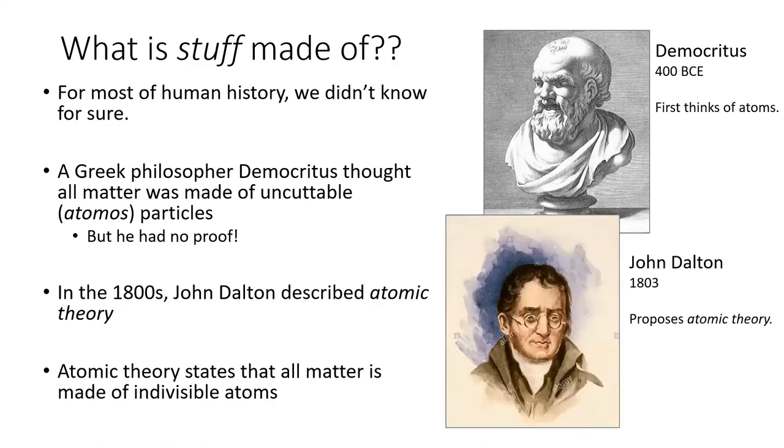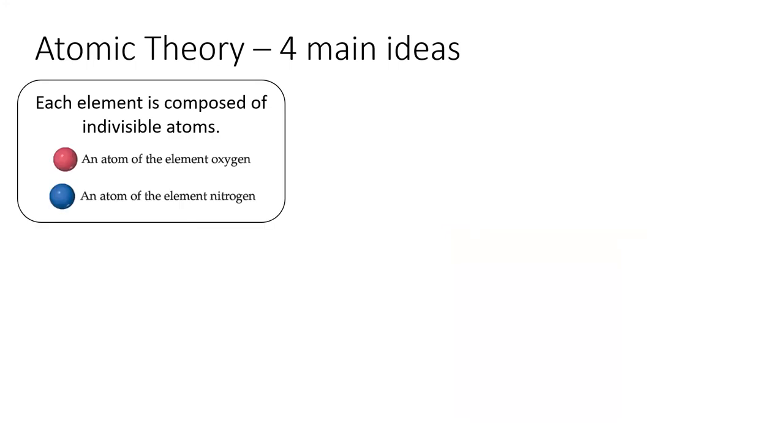It took until the 1800s before the English chemist John Dalton proposed atomic theory, which explained that all matter is made of indivisible atoms. There are four main components to Dalton's atomic theory. First, each element is composed of indivisible atoms.